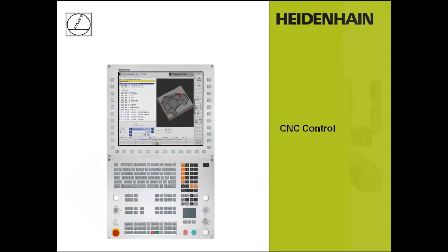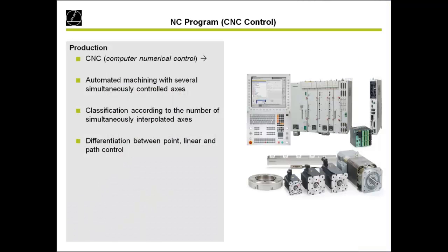On the CNC control side, this is the Heidenhain product overview. We are not only developing and selling controls — we also sell motors, length measurement systems, and angle measurement systems. It's very important that the customer also uses Heidenhain measurement systems, especially the length and angle measurement systems, if you want to achieve a really high-accuracy milling process.